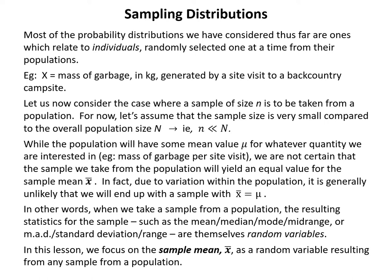For example, we looked at a random variable x equaling the mass of garbage in kilograms generated by a site visit to a backcountry campsite. Now consider the case where a sample of size n is taken from a population of size N, where n is much smaller than N. While the population will have some mean value mu for the quantity of interest, we are not certain that the sample will yield an equal value for the sample mean x-bar.